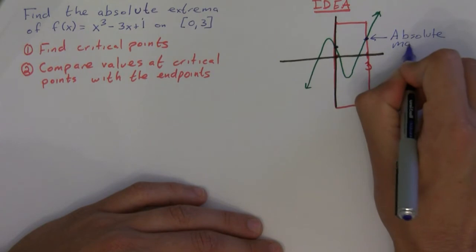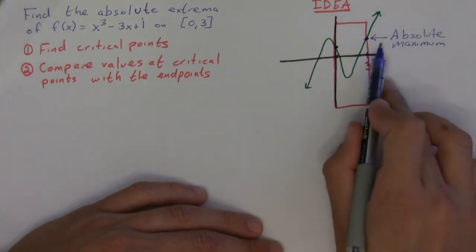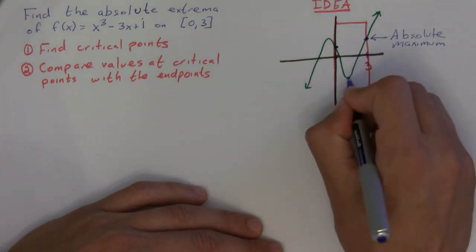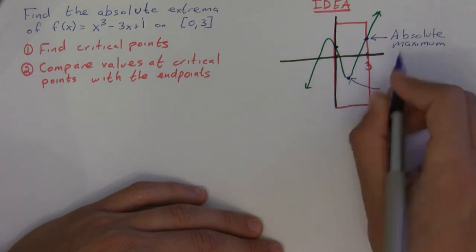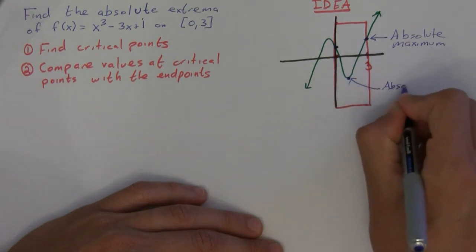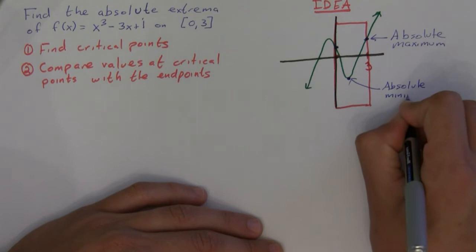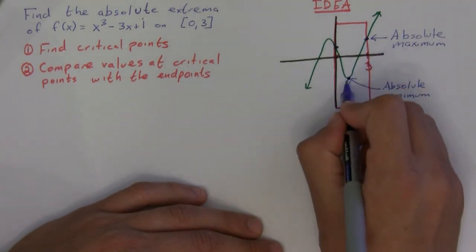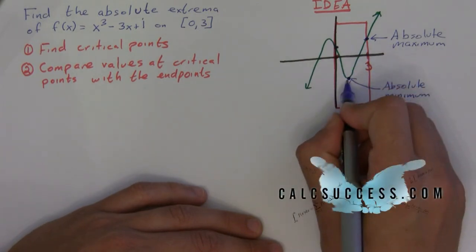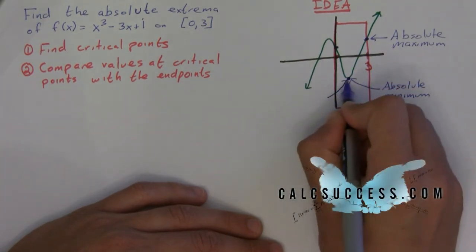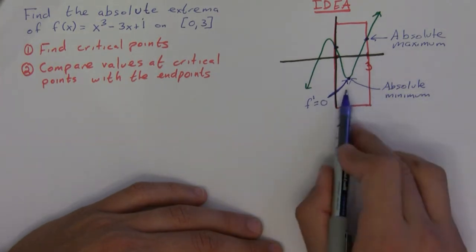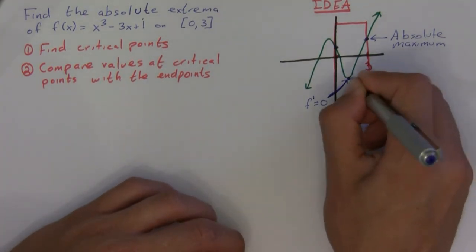Okay, but then the absolute minimum, well that's obviously this one down here, and this happens at a local minimum. Now remember, local minimum, this is a spot where the derivative is equal to zero because the slope of the tangent line is zero.